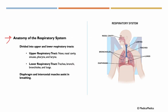Now let's delve into the anatomy of the respiratory system. It is divided into the upper and lower respiratory tracts. The upper respiratory tract covers the nose, the nasal cavity, sinuses, the pharynx, and the larynx. While the lower respiratory tract covers the trachea, the bronchi, bronchioles, and the lungs. The diaphragm and the intercostal muscles assist in breathing.